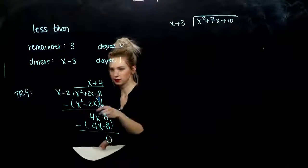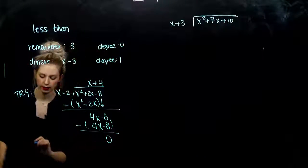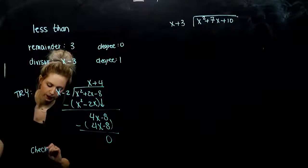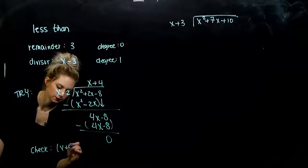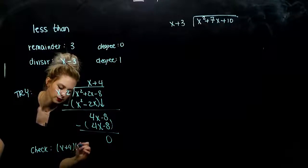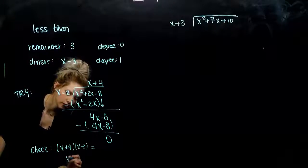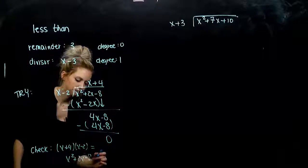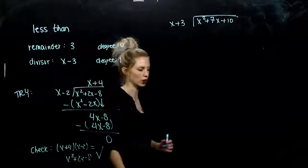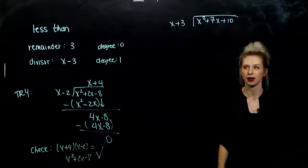So that division comes out to x plus 4. If you check it: is it true that x plus 4 times x minus 2 is really equal to x squared plus 2x minus 8? It is. We always have those checks to fall back on.